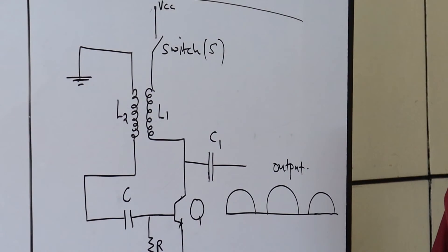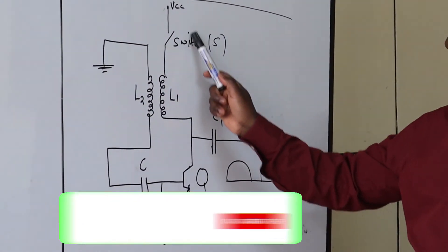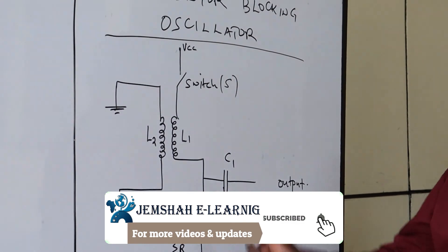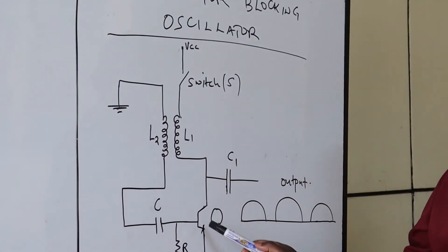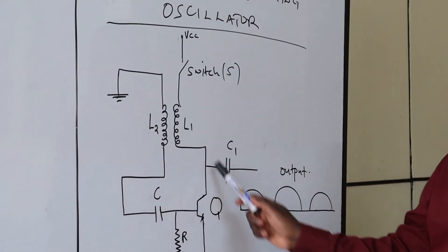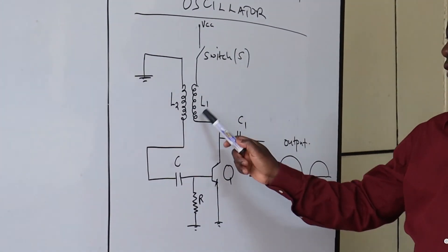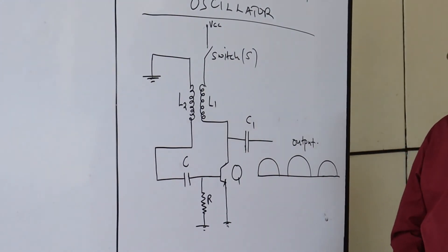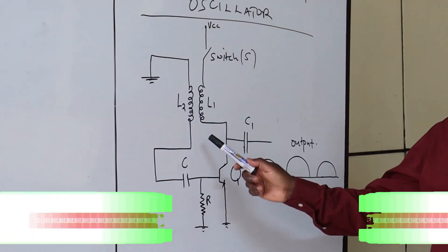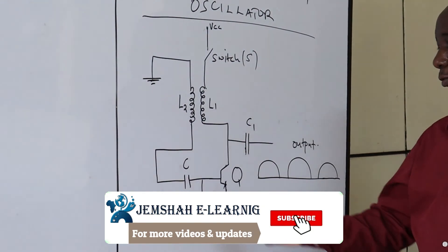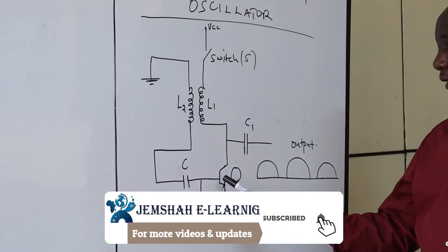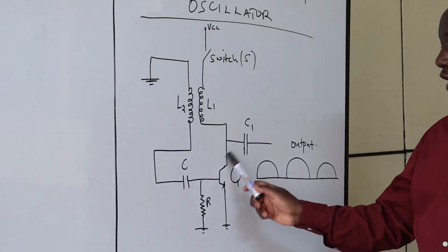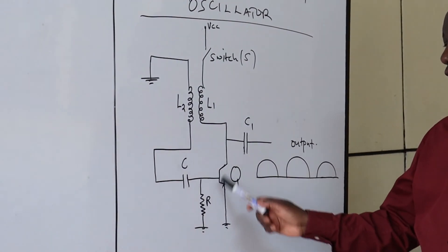What we have here is a VCC. When the switch is closed, the current rises rapidly. When current flows through to ground, it sets an EMF which is induced in L2 from L1. The EMF induced in L2 is able to go through C and actually increase the base current. When the base current is increased, the output of the transistor is driven to saturation.